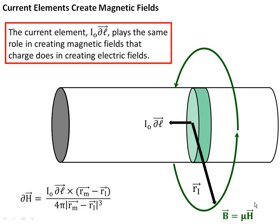So we learned last time that current elements create magnetic fields, and they act very much like charges did when we were talking about electric fields. This is really the core idea of what we're talking about here, that if you have a wire, and think of a very tiny slice of current moving through that wire, we're going to call this essentially I₀∂ℓ.